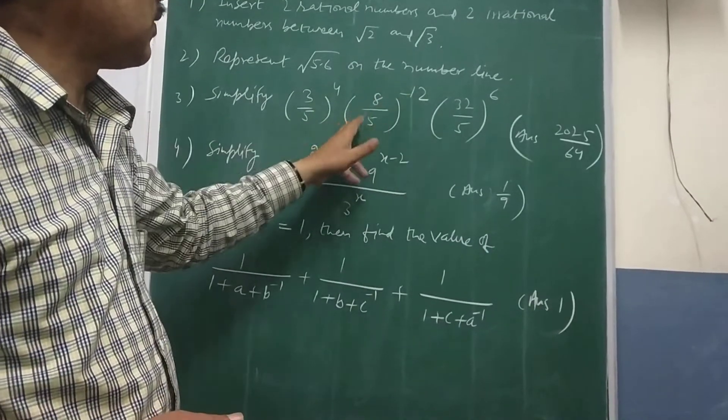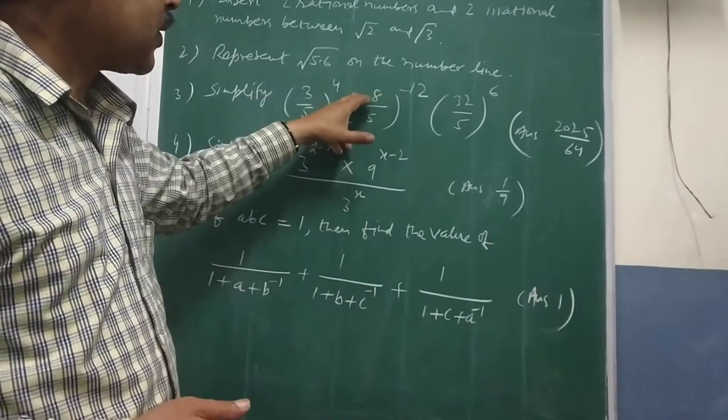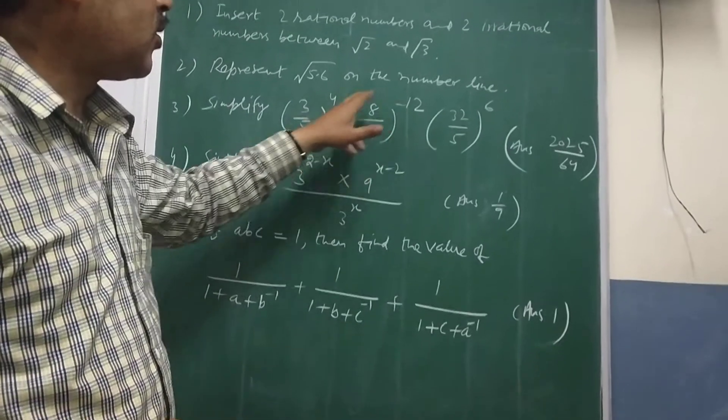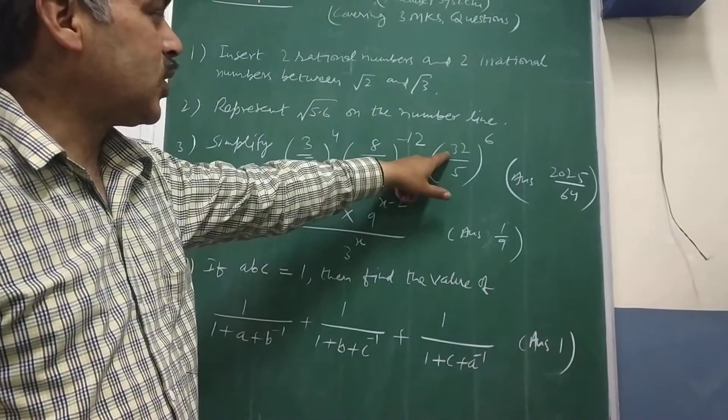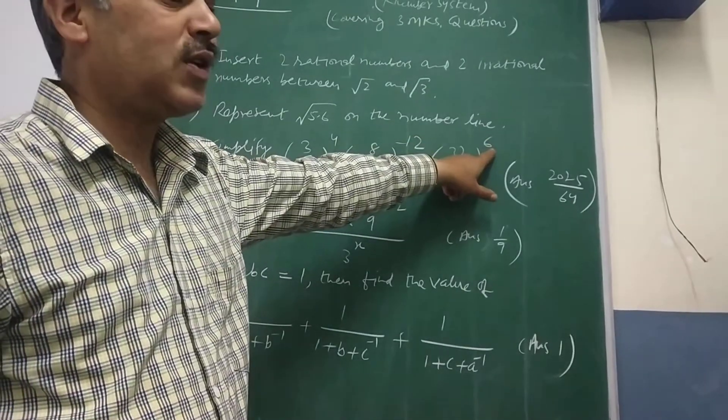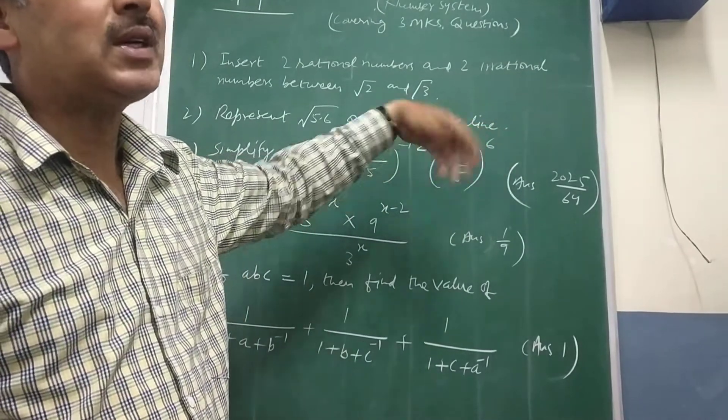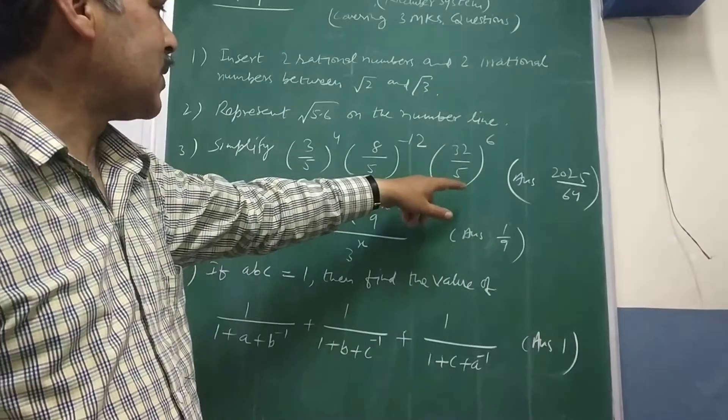5 raised to the power 12 will be there. 2 raised to the power 3 and 12 power that will make it 2 raised to the power 36. Here it is 2 raised to the power 5. It is 2 raised to the power 5 into 6 will make it 2 raised to the power 30 and then 5 raised to the power 6.